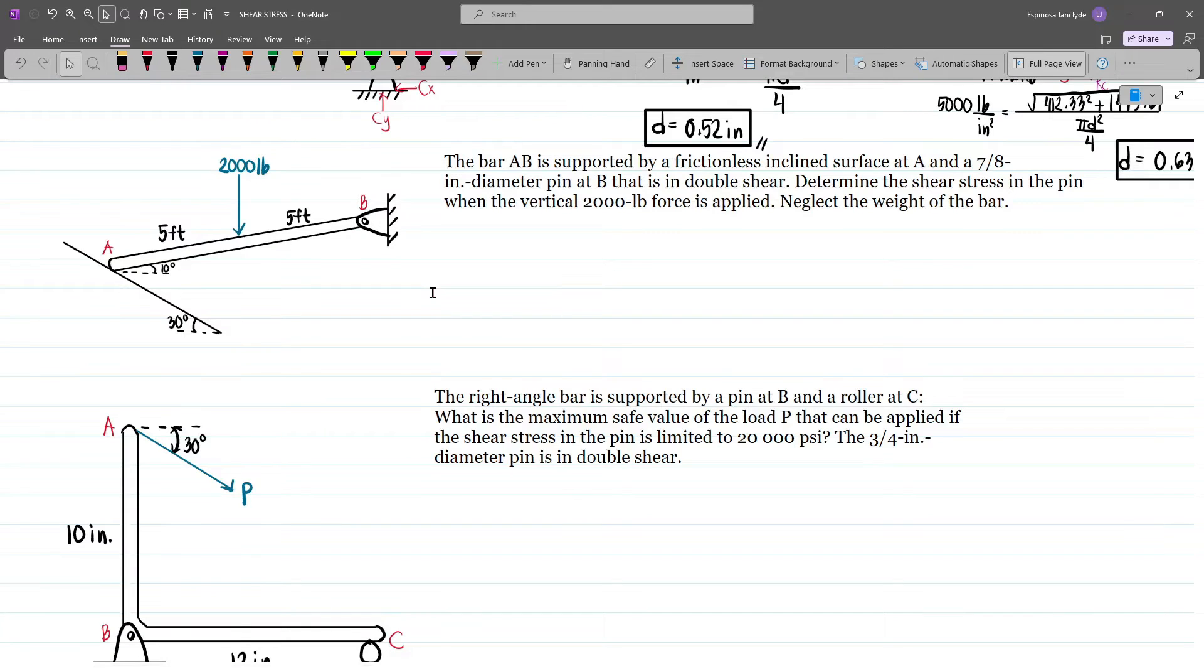Now, let's move on to the next problem. Bar AB is supported by a frictionless inclined surface at A and a 7 over 8 inches diameter pin at B that's in double shear.